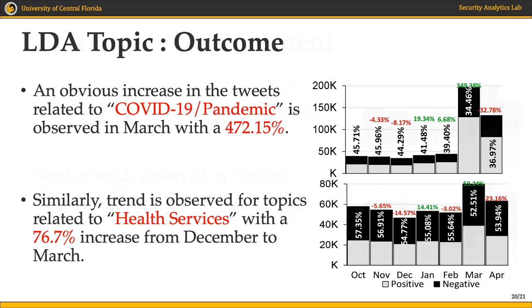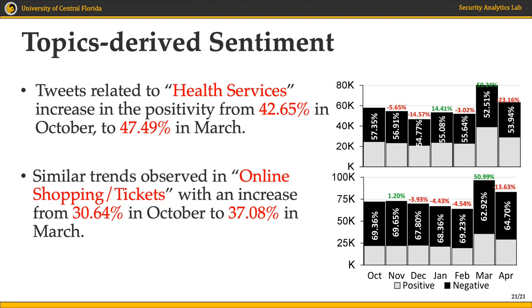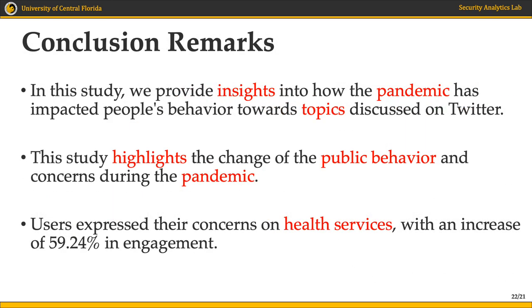In the analysis of sentiment before and during the pandemic, we found that the positivity rate for tweets related to health services increased from 42% in October to 47% in March. Similarly, we observed the same positivity rate increase in online shopping, which increased from 30% in October to 37% in March, as more stores were closing down.